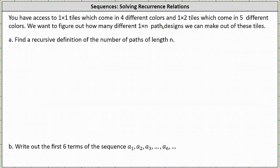You have access to one by one tiles which come in four different colors and one by two tiles which come in five different colors. We want to figure out how many different one by n path designs we can make out of these tiles.